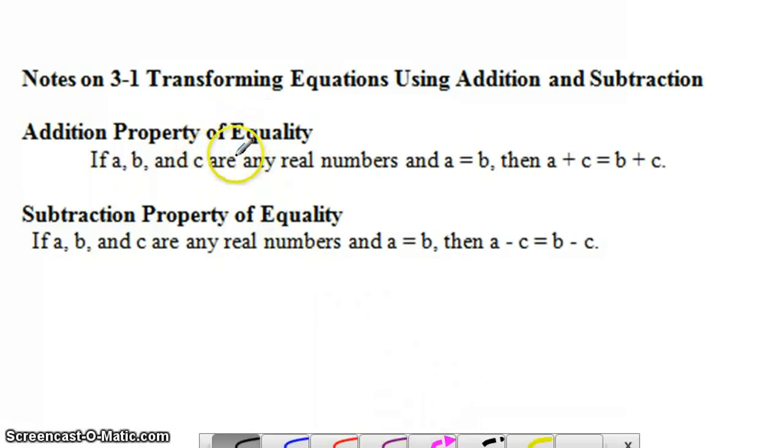The first is the addition property of equality. Basically, it says if you start with two numbers that are equal and add the same number to both sides, then the left and right sides of the equation remain equal.